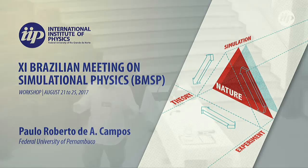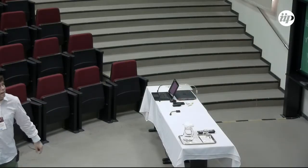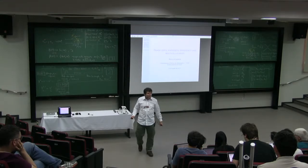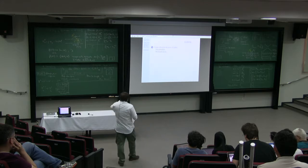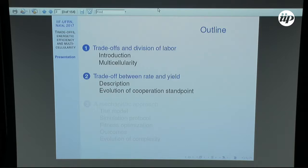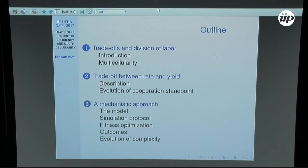All these things are pretty much connected, but what I really want to talk about is not in the title — it's about the evolution of complexity. First I will define trade-offs, give a well-known example of the trade-off between uptake rate and yield in the conversion of resource into energy and biomass, then present the approach we use to address the evolution of complexity.